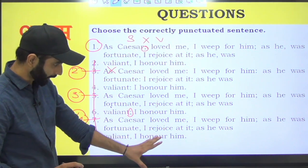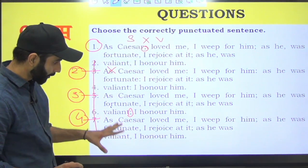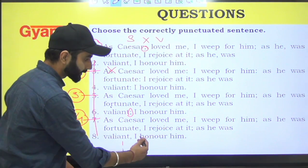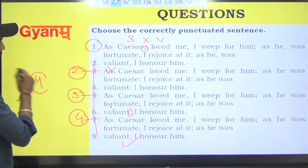As Caesar loved me, comma, I weep for him. Good. As he was fortunate, comma, I rejoice at it. Again break. As he was valiant, yes, I honor him. This one is the correct form. So we will go by option number four.